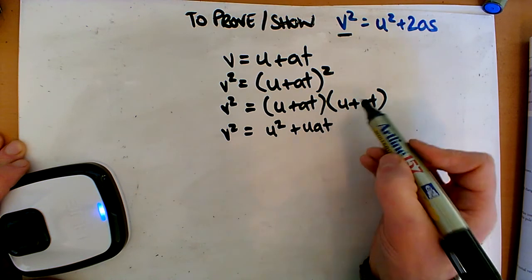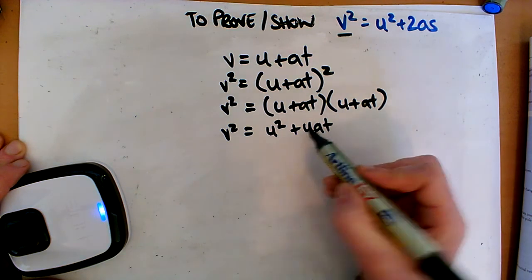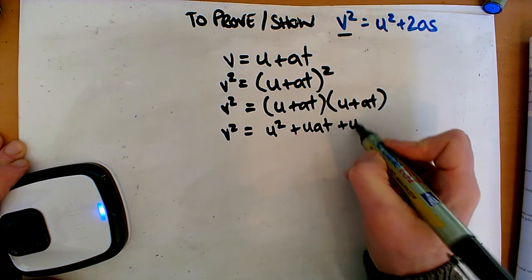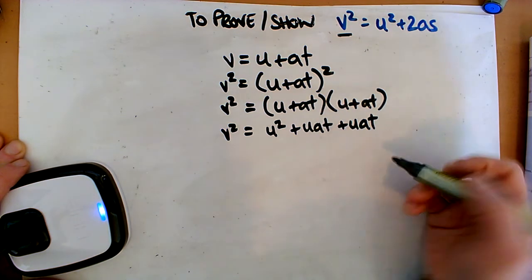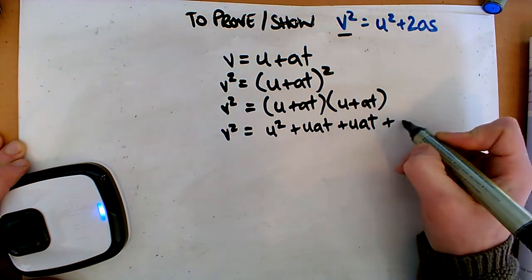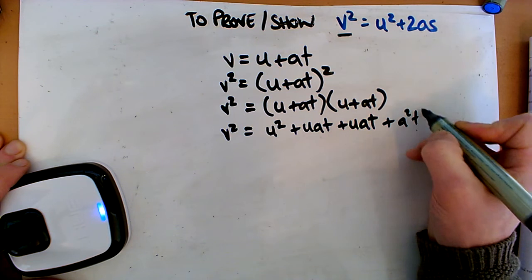Now the next one we have at multiplied by u, well that's the same as the last one, so it's just plus uat. And then at multiplied by at is at squared, or a²t².